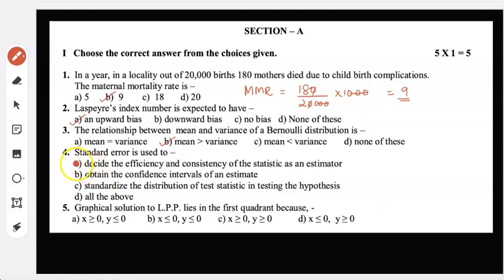Fourth: the standard error is used to decide the efficiency and consistency of the statistic as an estimator, obtain the confidence intervals of an estimate, standardize the distribution of test statistic in testing the hypothesis, or all of the above. The option is D.